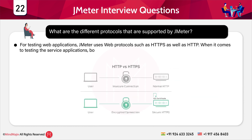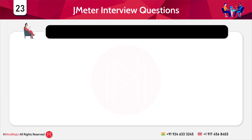The next question is: what are the different protocols supported by JMeter? For testing web applications, JMeter uses web protocols such as HTTP and HTTPS. For testing service applications, both REST and SOAP are supported. It also supports FTP and JDBC for analyzing database applications. Another common protocol JMeter handles is LDAP (Lightweight Directory Access Protocol), and mail server protocols such as IMAP and SMTP are also compatible with JMeter.